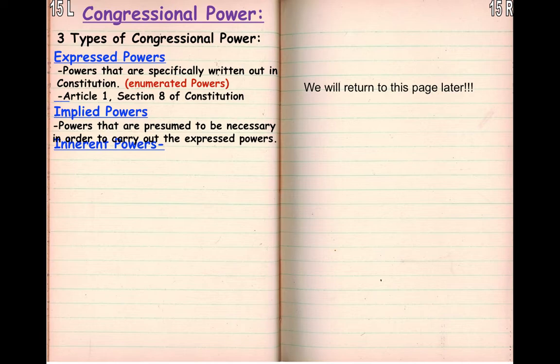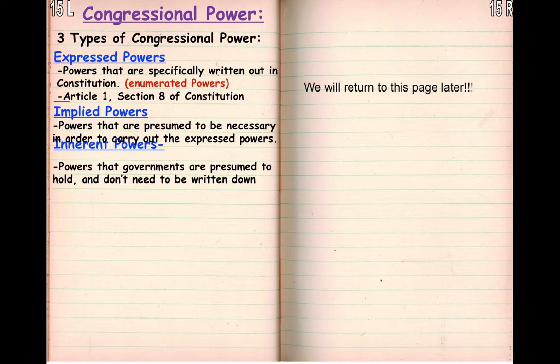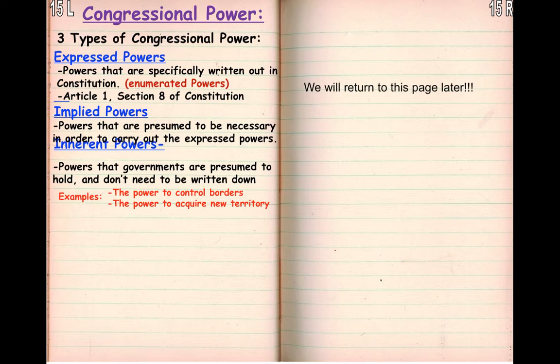Implied powers are powers that are presumed necessary and proper in order to carry out the expressed powers. For example, Congress has an expressed power to raise and support armies. An implied power of that is to force you to join their army, meaning they are going to draft you into the military. Inherent powers are powers that the government is presumed to already hold, so they don't need to be written down. Examples of this are to control borders and to acquire new territory — these are the no-duh sort of powers; of course they're allowed to do that because they're the government.